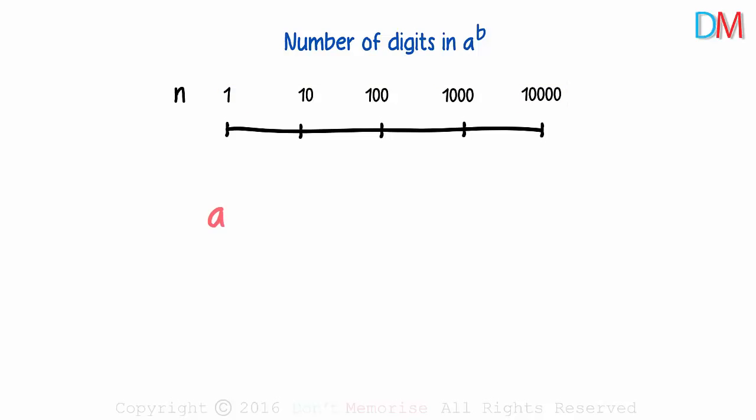Now we make equal units with multiples of 10 so that we cover a range from 1 to 10,000. So if the number A to the power B is 9, it'll lie between 1 and 10. If it's 400, it'll lie between 100 and 1000.